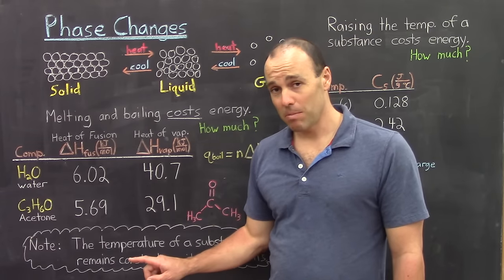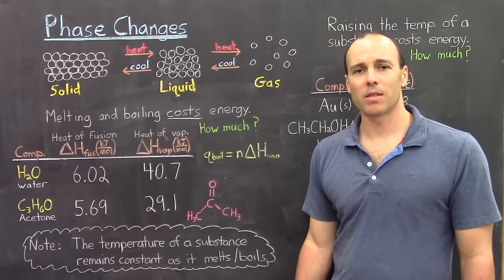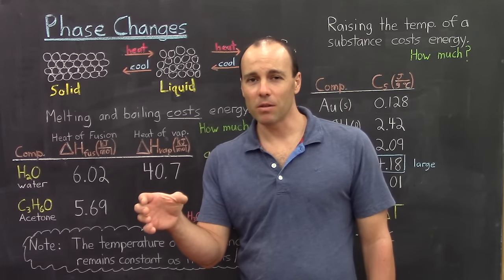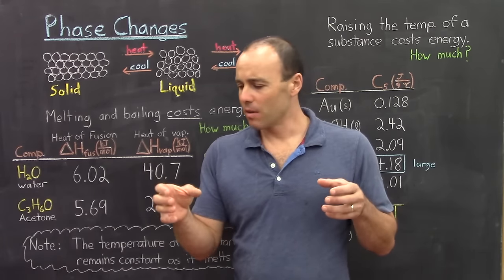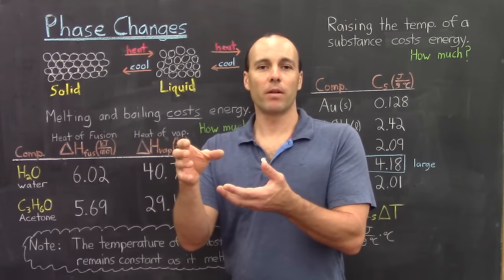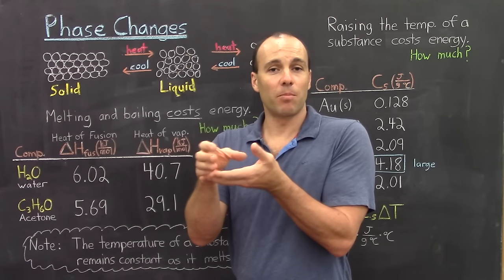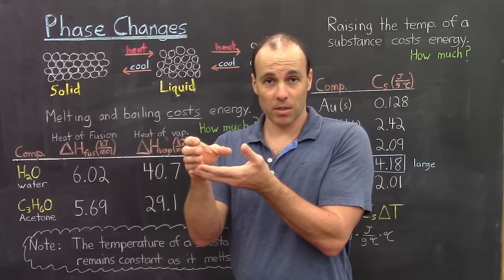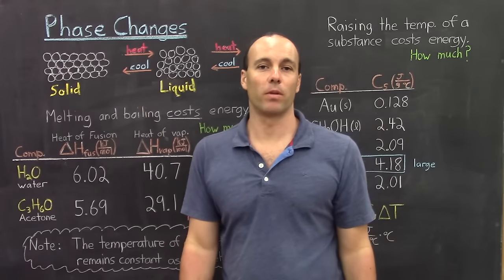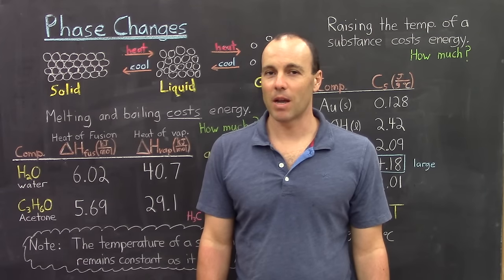A certain note needs to be made: when you do melt or boil a substance, the temperature of that substance remains constant. So as a substance melts or boils, it doesn't change temperature. For instance, if you have a beaker of water and you want to boil it, you would have to raise its temperature up to the boiling temperature. When water is at the boiling temperature of 100 degrees Celsius, as it boils, the temperature of the liquid water stays at 100 degrees Celsius until all the water has boiled off. Phase changes take place at a roughly constant temperature.